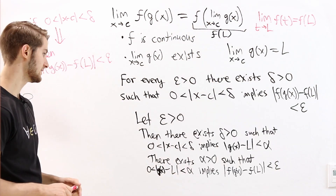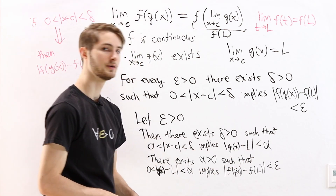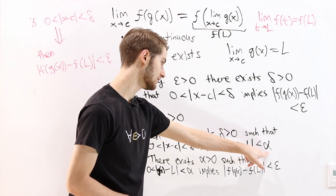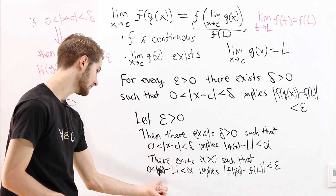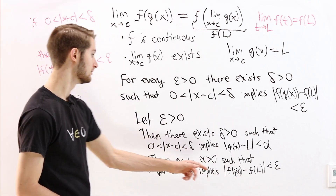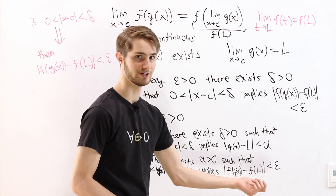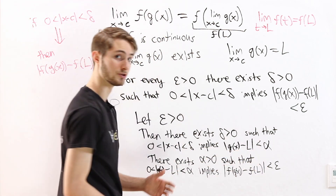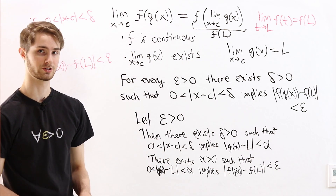I should also point out the special case: what if g of x equals L? That's allowed. If g of x equals L, then the absolute value distance from g of x to L equals 0, so we don't directly get the implication from the alpha condition. But if g of x equals L, then obviously f of g of x equals f of L, because the inputs to the function are the same. So that absolute value expression is also 0, which is less than epsilon — no problem with that special case.